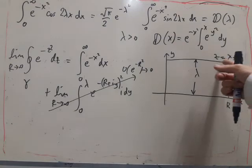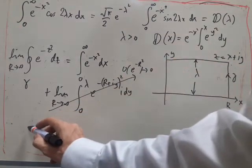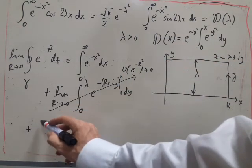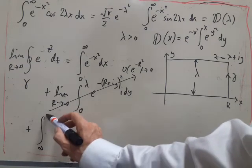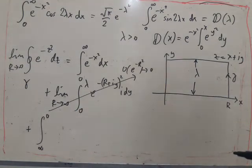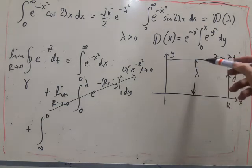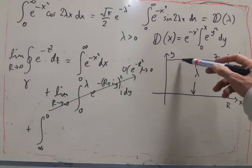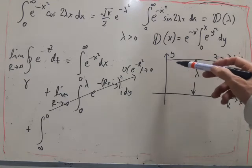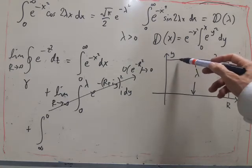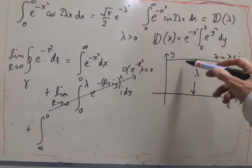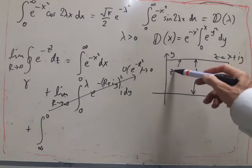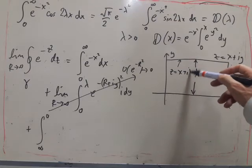Then the next bit is the integral along here. So we can go ahead and take the limit as r goes to infinity and x varies from infinity to zero. And here we have z equals x plus i lambda along here.